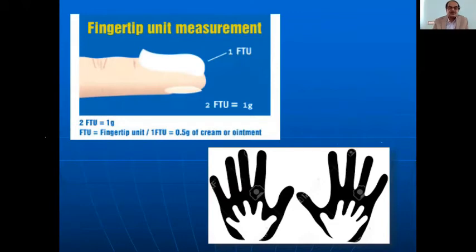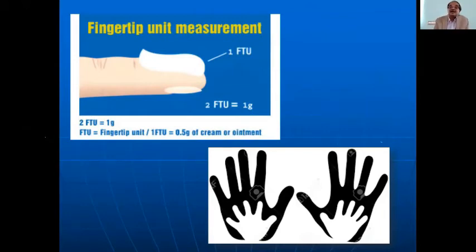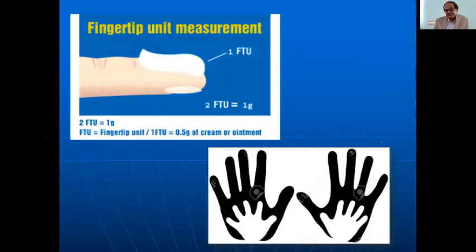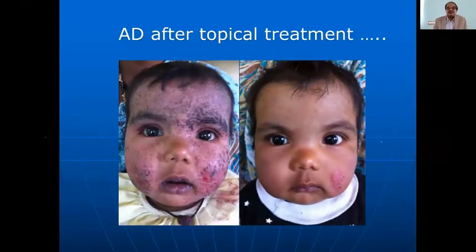Fingertip unit measurement is very important — one fingertip unit is about half a gram of cream, and two fingertip units is one gram, sufficient to cover two palm areas. Some patients apply a whole tube in one day. Over-application causes increased absorption and can even affect the hypothalamic-pituitary axis. Using topical steroid for four weeks followed by topical calcineurin inhibitor gives desired results.